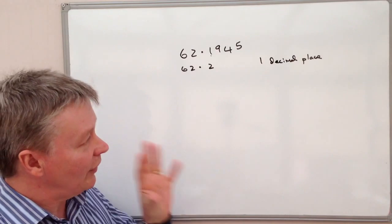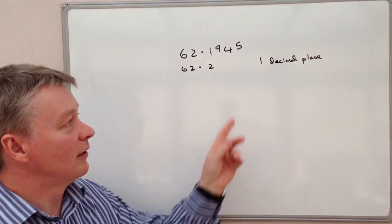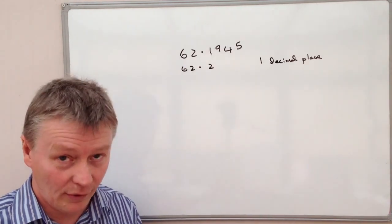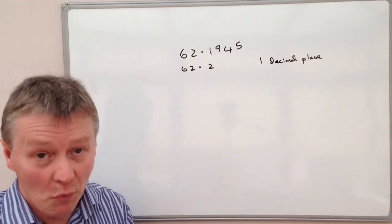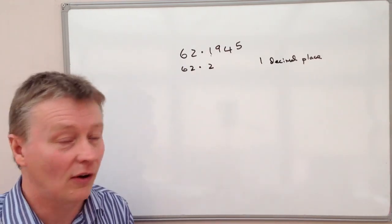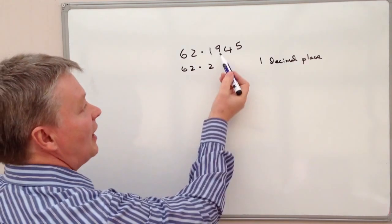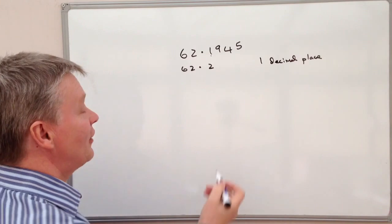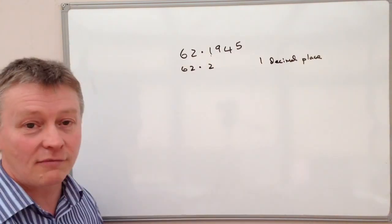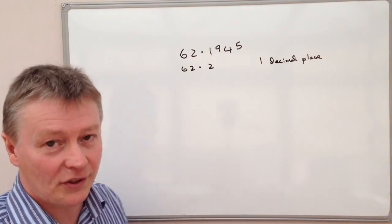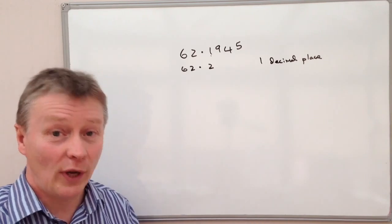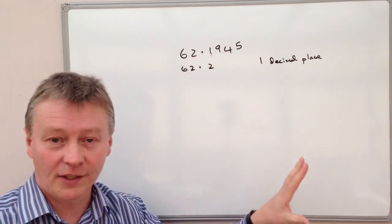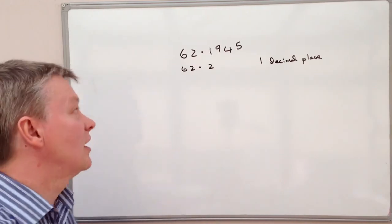So the thing about decimal places is you look at the number of decimal places that you're being asked to write the number to, and then you look at one more. You look at the next one along. So in this particular case, the next one along is nine, which is above five. So therefore that one becomes two. If you look at MathsRap, there's quite a few different questions that you can download and have a go at which are very similar to this to give you plenty of practice.